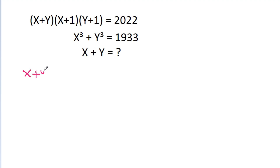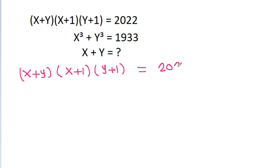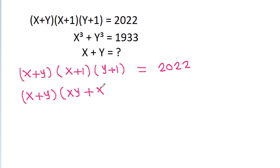We have x plus y times x plus 1 times y plus 1 is equal to 2022. Expanding: x plus y times xy plus x plus y plus 1 is equal to 2022.